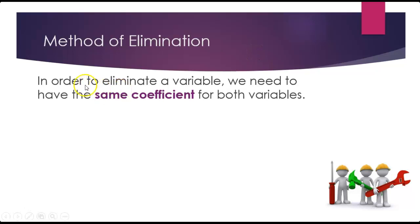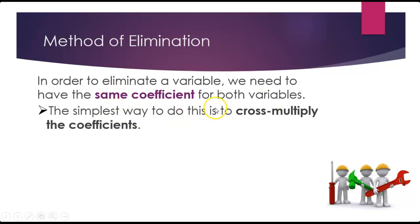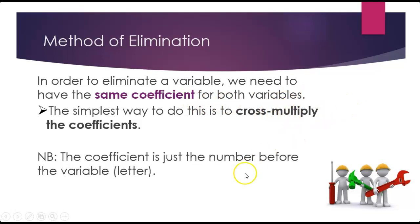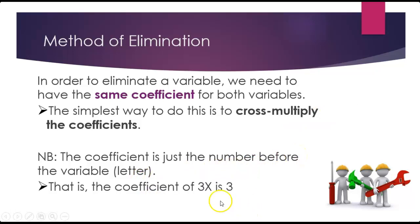When we're looking to eliminate a variable, the first thing we need to do is ensure that we have the same coefficient for both variables — and by variables, we're just talking about letters x and y. The simplest way to ensure that is to cross multiply the coefficients. A coefficient is just a big word for the number that comes before the variable or the letter. For example, looking at 3x, the coefficient there is 3 — the number that comes before the letter.